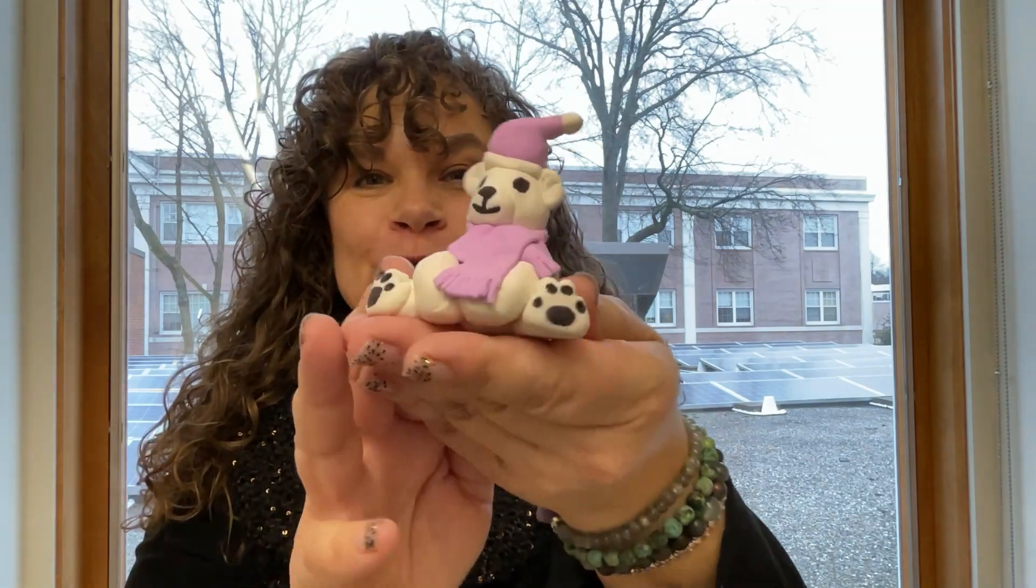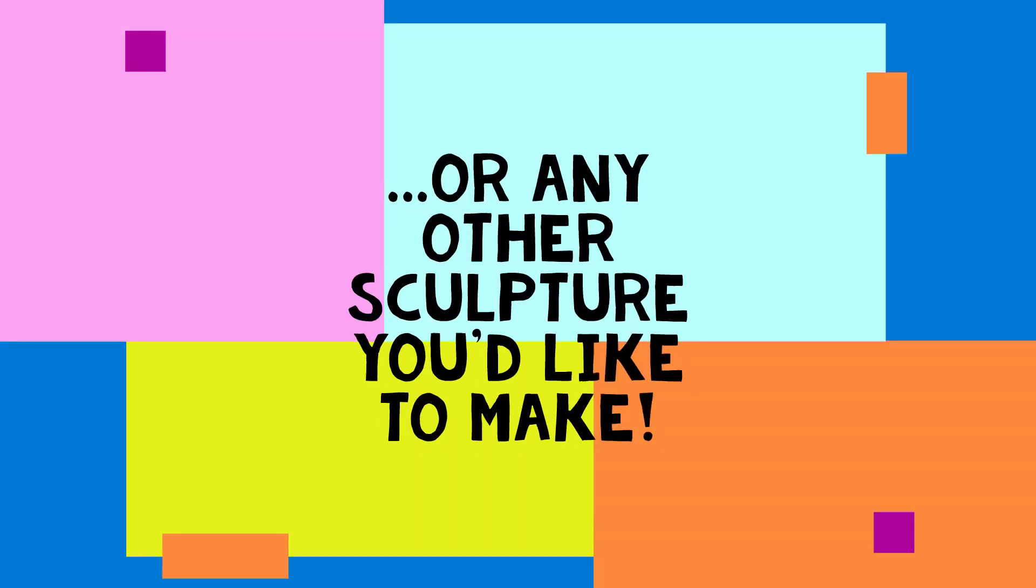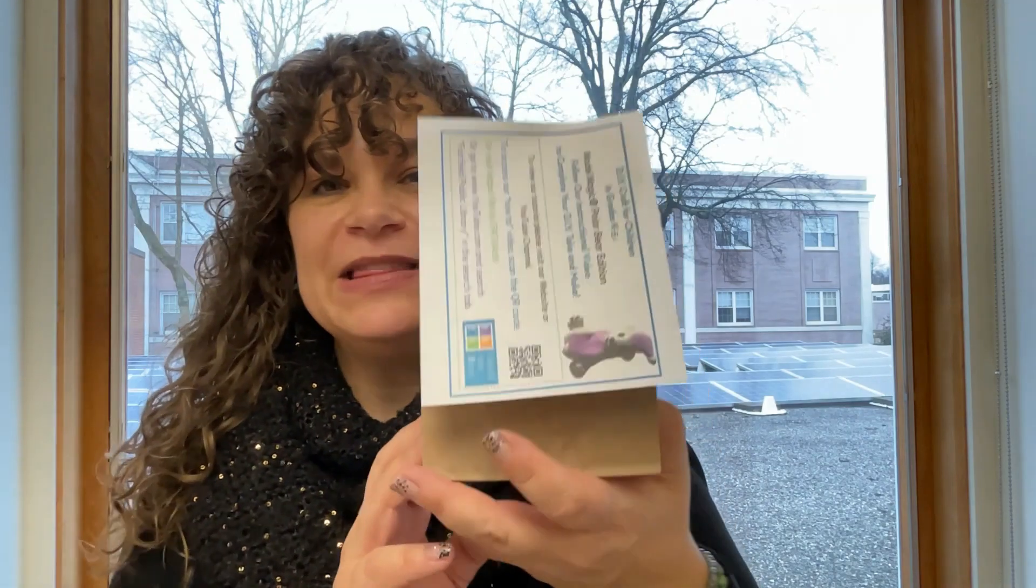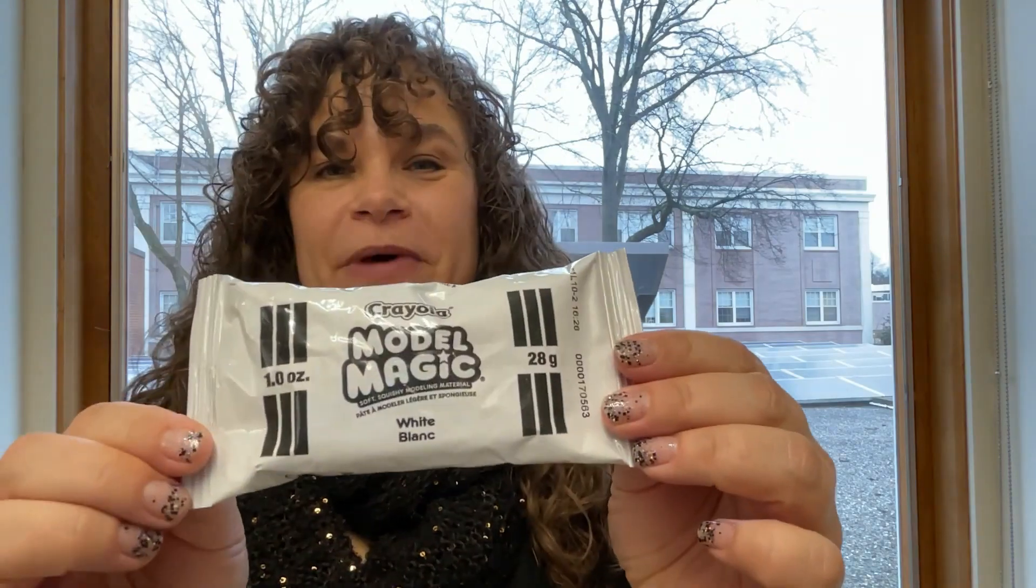Hey friends, Ms. Wendy with the Fairfield Public Library and today we will be making a Polar Bear. In your kit that you picked up at the Fairfield Public Library or the Woods Branch Library, you'll find the following items: one package of Crayola Model Magic and one craft stick. You'll also need some additional items - a pair of scissors and markers. You can use any color marker you'd like but I do suggest that you have a black marker as well. Let's get started!